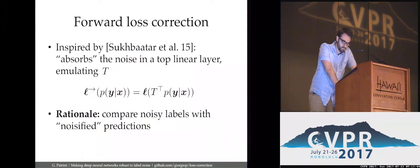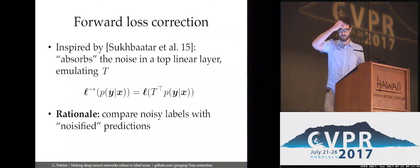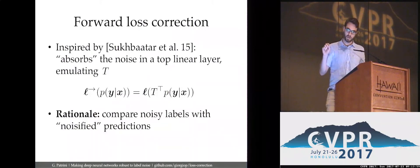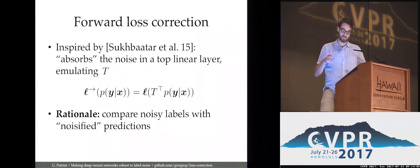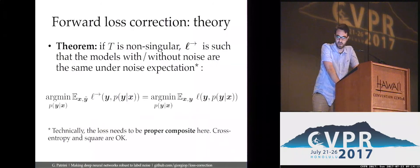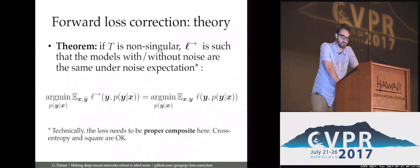The second idea is called forward loss correction, inspired by Sukhbaatar et al. Here we bake into the loss a multiplication by the matrix T after the softmax output of the neural net. Basically we are noisifying the predictions and comparing them with the noisy loss. Surprisingly, this has essentially the same guarantee as the backward approach: we obtain an unbiased estimator of the minimizer, and it is proven robust.